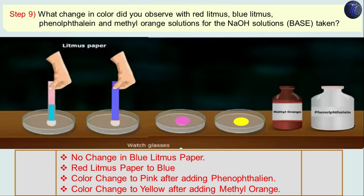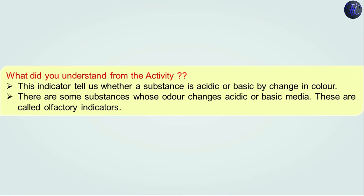These are the observations obtained from the indicators in a basic solution. Note down these observations. From this activity, we understand that a substance can be identified as acidic or basic by the change in color of the indicator.